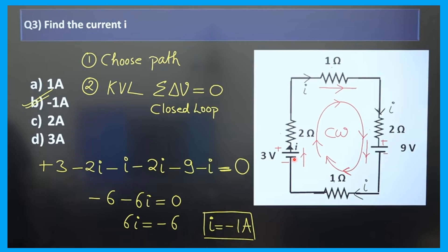Starting from a point, the first element is the cell. The path moves from negative to positive terminal, so the EMF is positive: plus 3. Next is a 2-ohm resistor — the current and path are in the same direction, so delta V is negative: minus 2I. Then a 1-ohm resistor — same direction — so minus I.